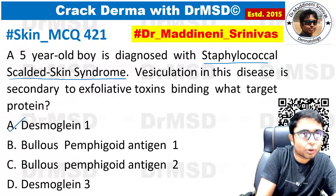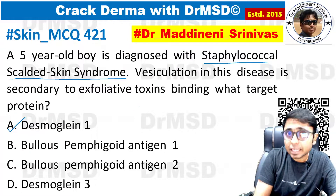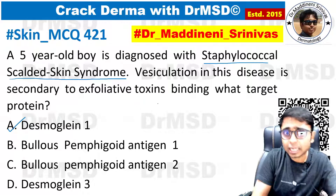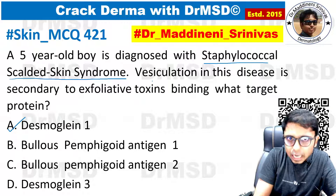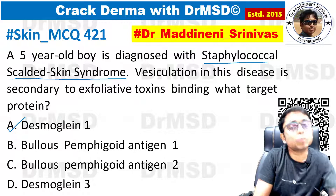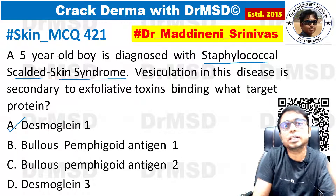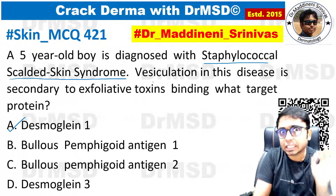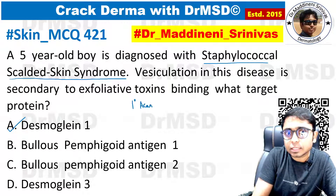If you marked the answer as option A — desmoglein 1 — you are absolutely right. If your basics are strong, you'll remember that in staphylococcal scalded skin syndrome, apart from pemphigus vulgaris and pemphigus foliaceus, there is a process called primary acantholysis.